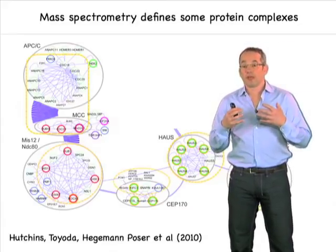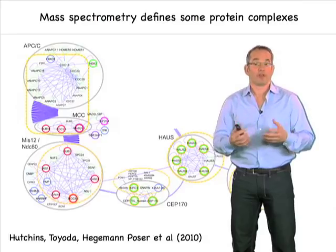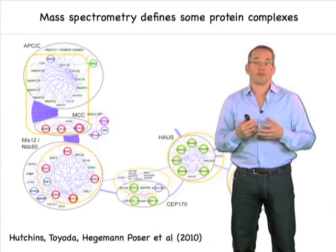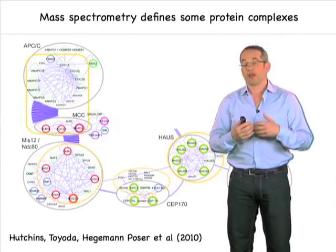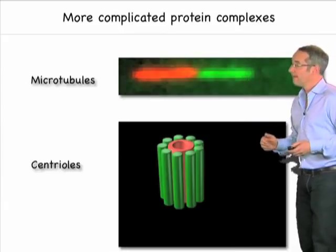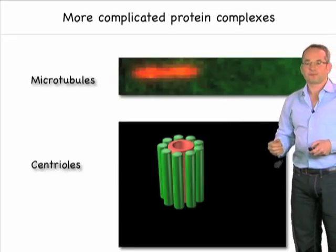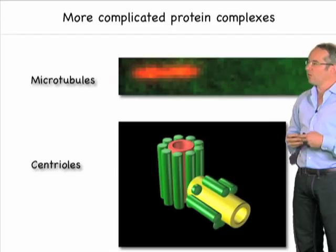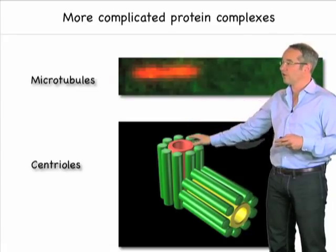This approach, known as proteomics, is a big industry now — many labs are trying to define the sets of protein complexes involved in very different processes. For instance, we might like to understand not what proteins are required for cell division, but what protein complexes are required for the division of a cell. Some protein complexes are particularly interesting in the way they function — one of those are polymers. Here I'm showing you a microtubule growing and shrinking. There are also things like centrioles, which are very complex structures — protein complexes put together in very complex ways. In the next parts of my talk, I'm going to talk more about microtubules and centrioles and how they're put together.